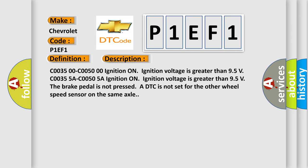C0035 00 C0050 00 ignition on, ignition voltage is greater than 9.5 volts. The brake pedal is not pressed, or DTC is not set for the other wheel speed sensor on the same axle.